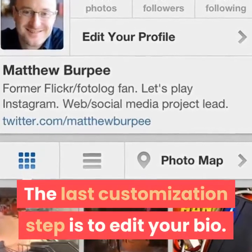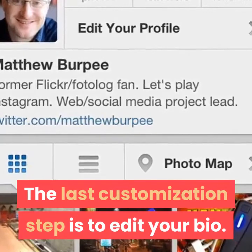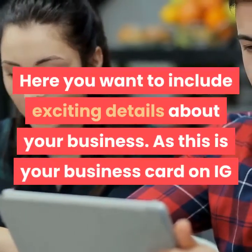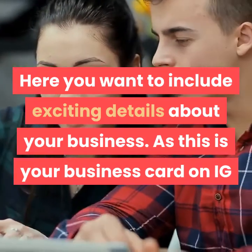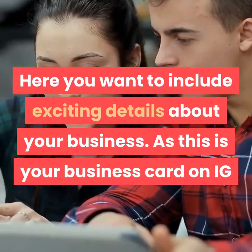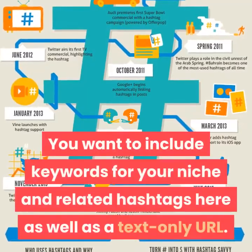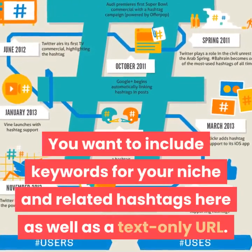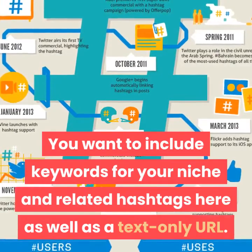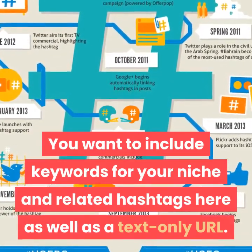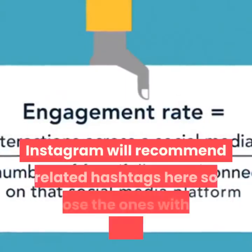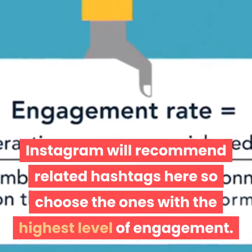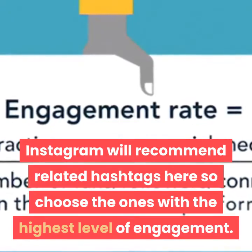The last customization step is to edit your bio. Here, you want to include existing details about your business. As this is your business card on Instagram, you want to include keywords for your niche and related hashtags, as well as a text-only URL. Instagram would recommend related hashtags here, so choose the ones with the highest level of engagement.